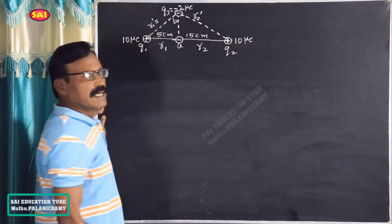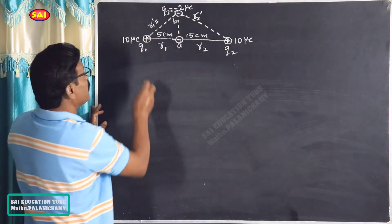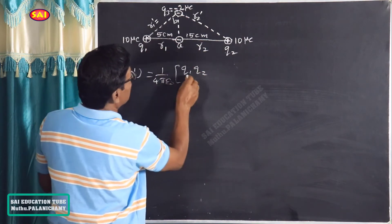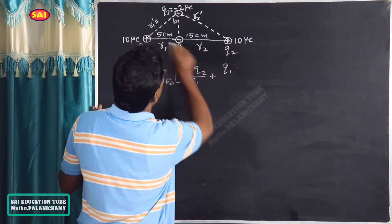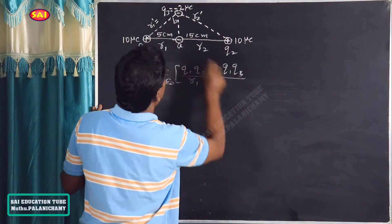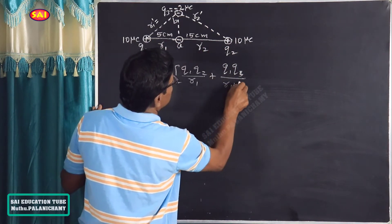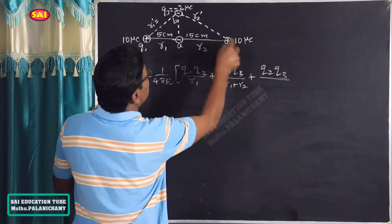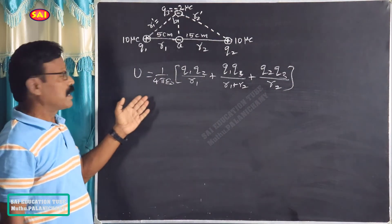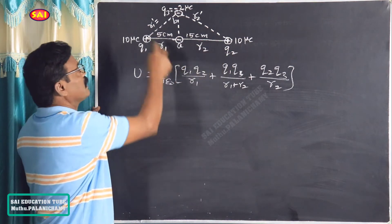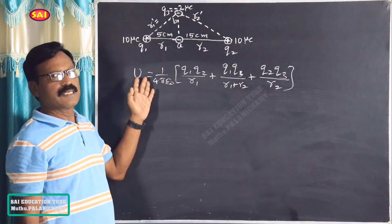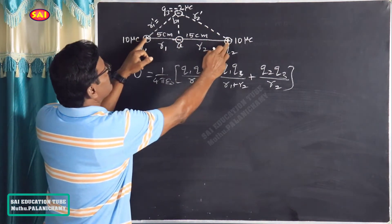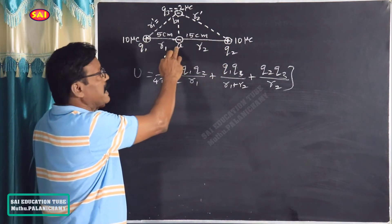The potential energy formula is: QE = 1/(4πε₀) × [Q1·Q2/R1 + Q1·Q3/(R1+R2) + Q2·Q3/R2]. We use this general equation to find the initial and final potential energy configurations of the system with the three charges.